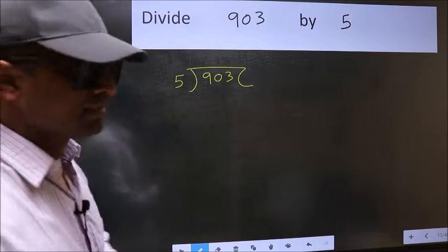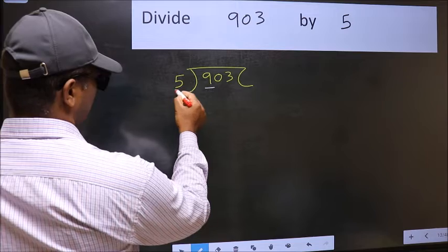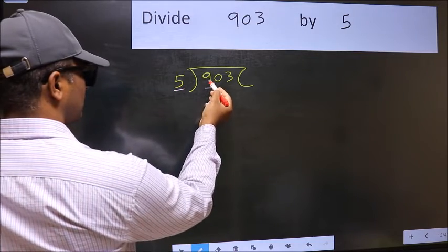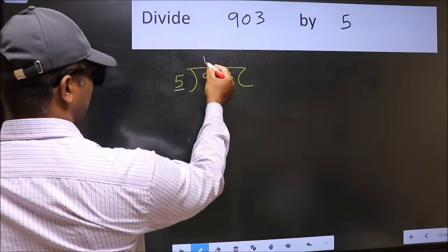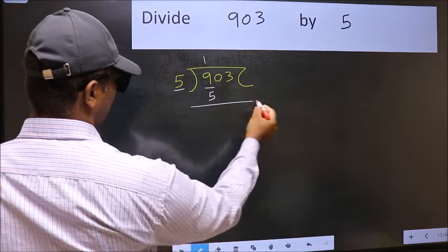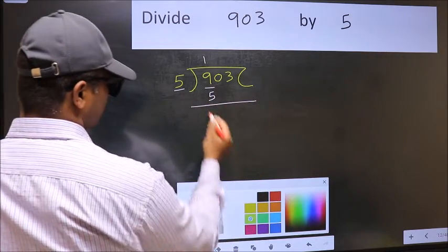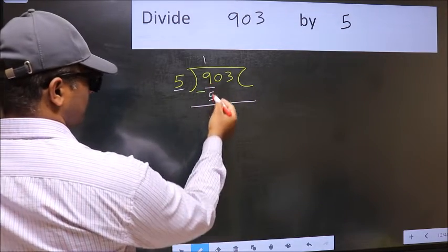Next. Here we have 9 and here 5. A number close to 9 in 5 table is 5 (1×5). Now you should subtract. 9 minus 5, 4.